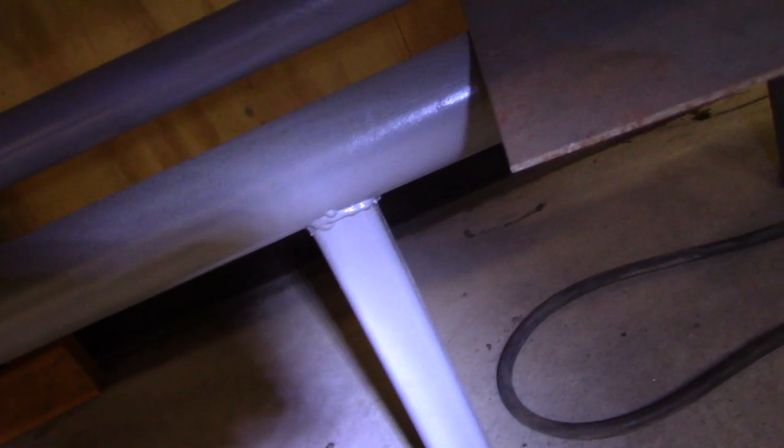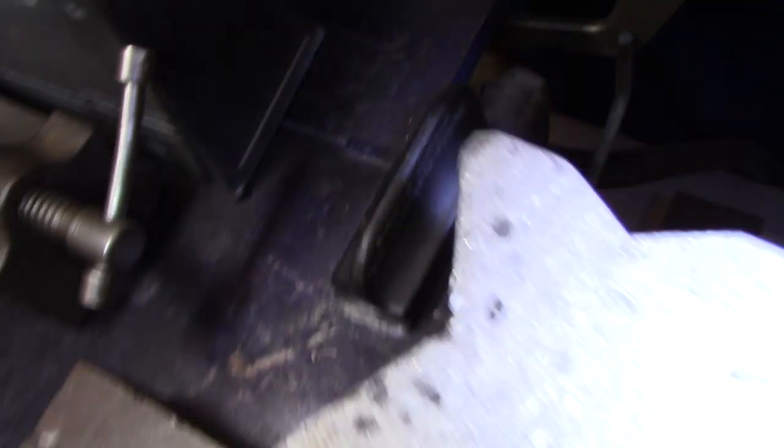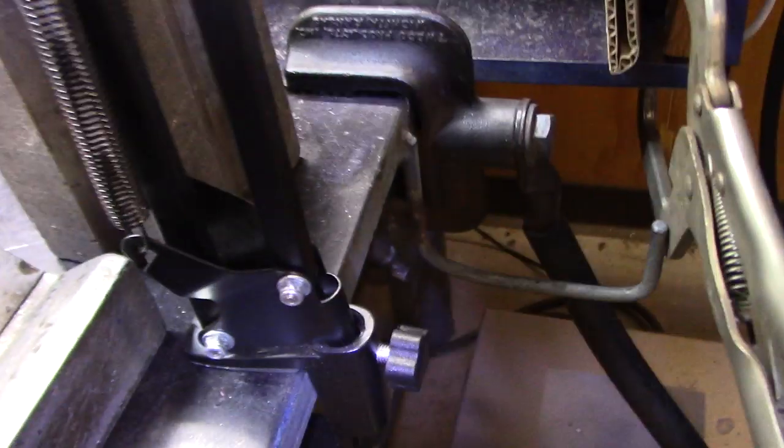That's the ground attachment to my table. Here is the ground clamp to my welding machine that's attached to the table. Okay, now that's where it gets its ground, right there.